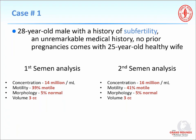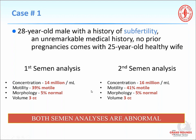Going back to our case: the 28-year-old man comes in with his 25-year-old healthy wife who has no abnormalities. The first semen analysis shows 14 million sperm per cc and 39% motility; the second shows 16 million and 41% motility. Both analyses in this young man with a large varicocele and his young wife should be considered abnormal and treatment should be offered. He should not be considered normal simply because he has 1 million more than the 5th percentile cutoff.